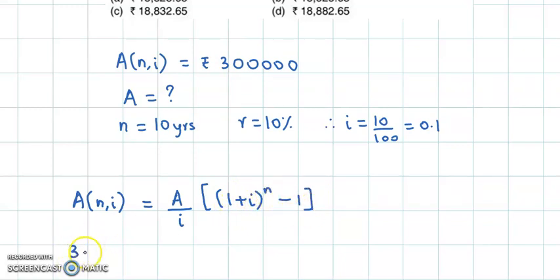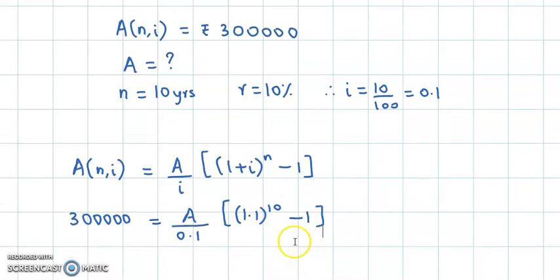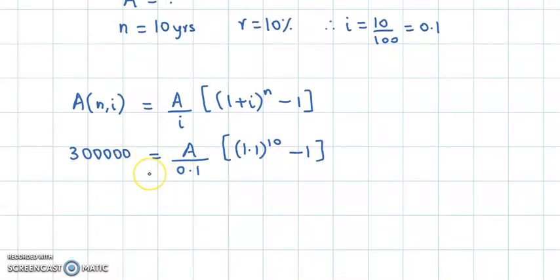Our accumulated value is 3 lakhs. So 300000. A is missing. i's value is 0.1. A into 1 plus 0.1, so that will be 1.1 raised to 10 minus 1.